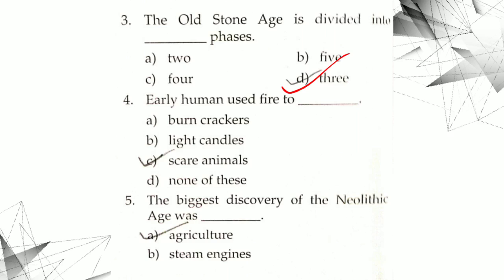That is three. Early humans used fire to - early humans fire ka use karte the. It's obvious, to scare animals.